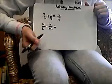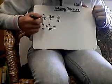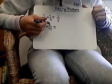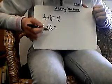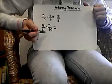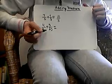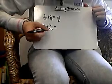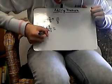Now, a harder problem: 4 fifths plus 3 tenths. You can't add these like this because you have to find the same denominator.